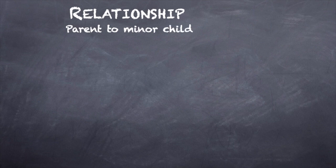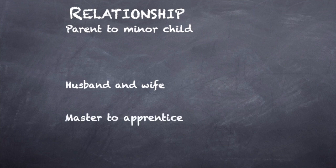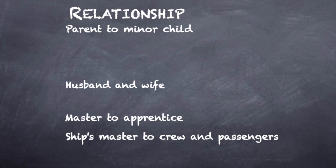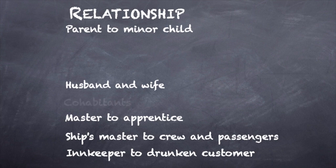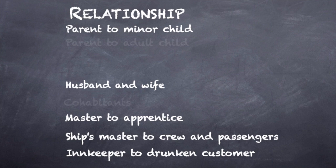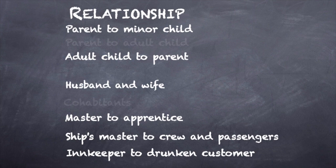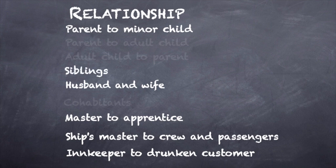Drilling down: what are these relationships? A parent owes a duty to act to a minor child. Husband and wife owe duties of aid to each other. A master owes a duty to assist an apprentice in avoiding harm. A ship's master has a duty to crew and passengers. An innkeeper has a duty to help a drunken customer avoid harm. Cohabitants, however, do not owe each other a duty of aid. Parents to adult children is not a recognized relationship giving rise to a legal duty of assistance. As of today, there is no relationship giving rise to a duty to assist siblings.